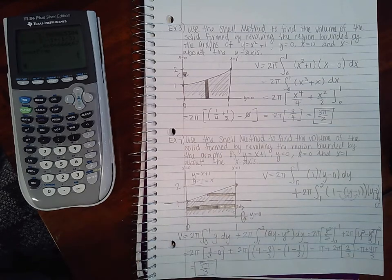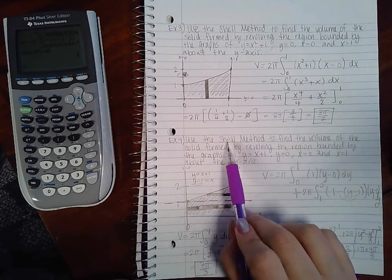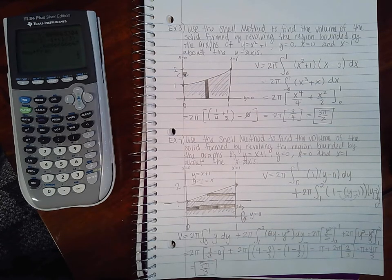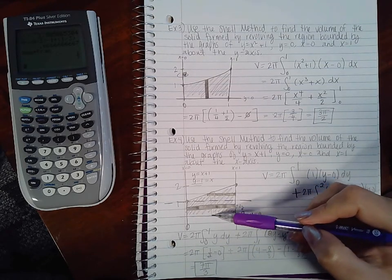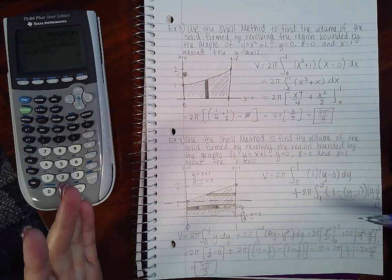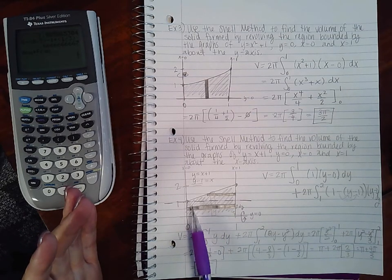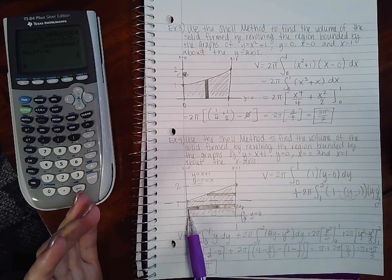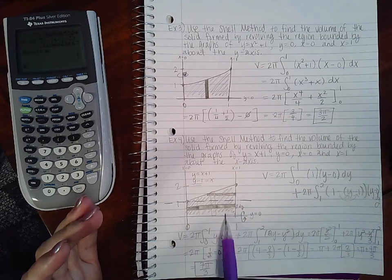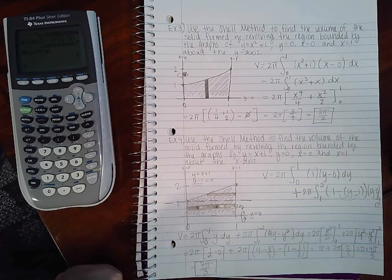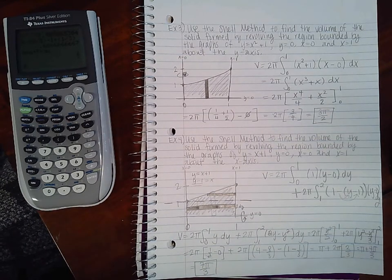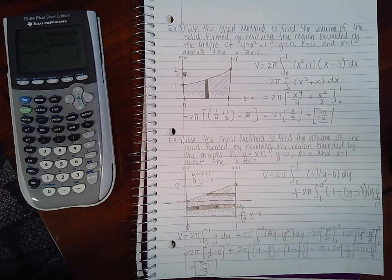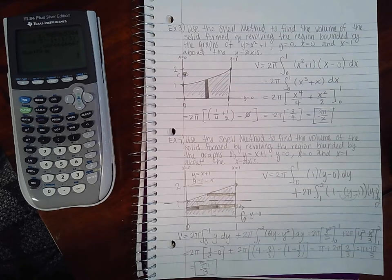Now just FYI, had I not been told to do the shell method, this problem would have been a lot easier if I integrated with respect to x. Because notice, if you put a vertical rectangle here, you don't have to do two different parts. Because the vertical rectangle would be the same. It would always be this height, this line, no matter where you were. Whether your rectangle was here, or your rectangle was there, or it was in the middle. And so then you wouldn't have to split the integral into two pieces. So, some instances it's easier to use disk or washer, and then some instances it's easier to use shell method. It all depends on the problem, and what you're revolving around.